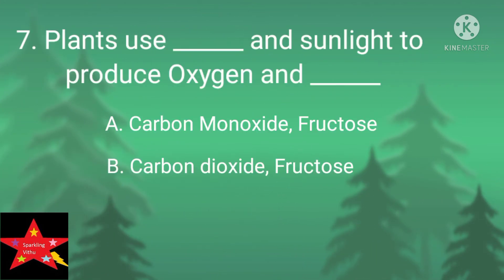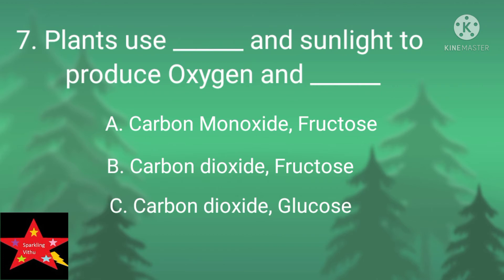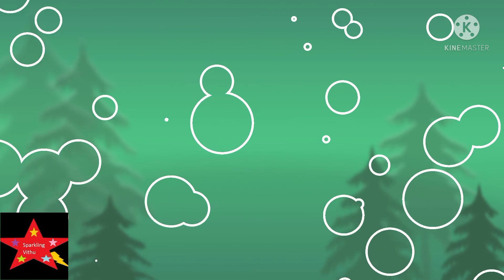Plants use blank and sunlight to produce oxygen and blank. Answer: C — Carbon dioxide and Glucose.